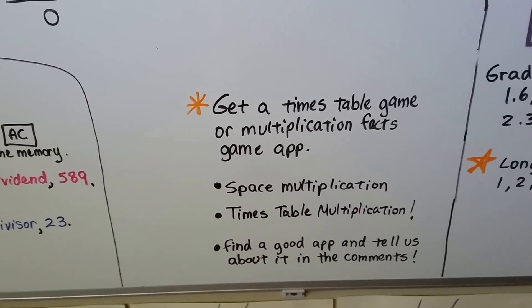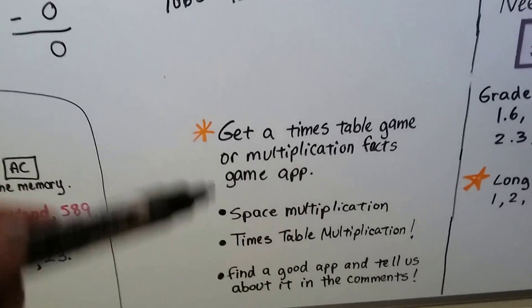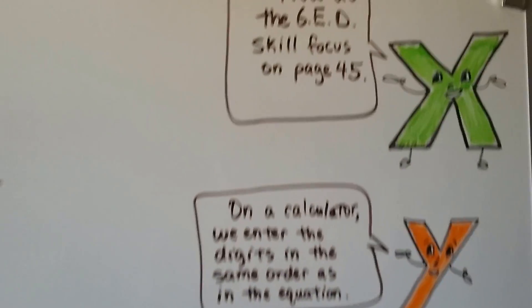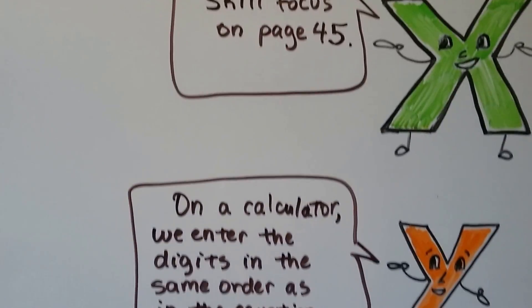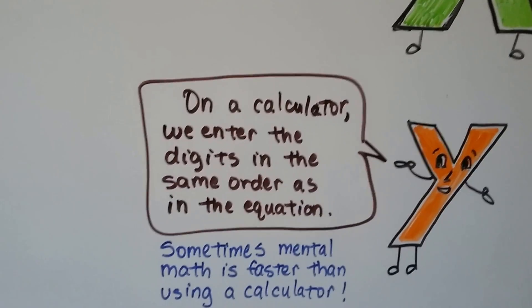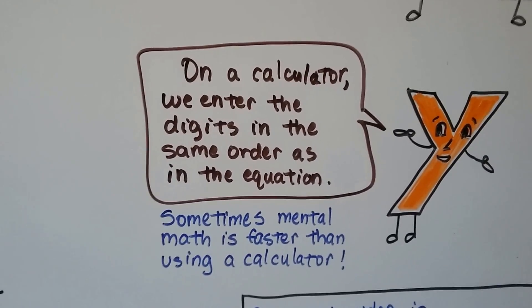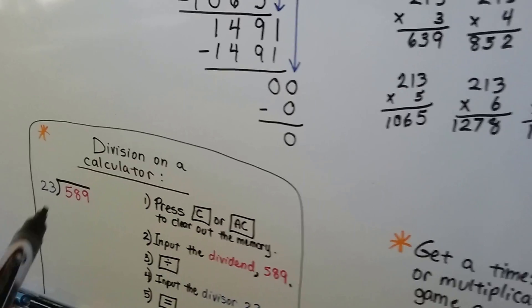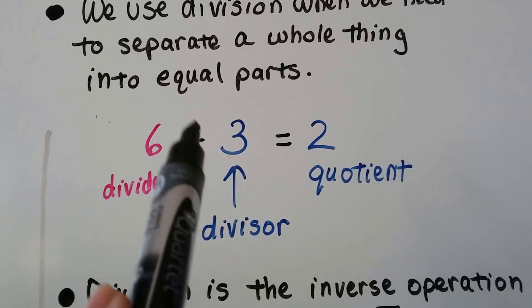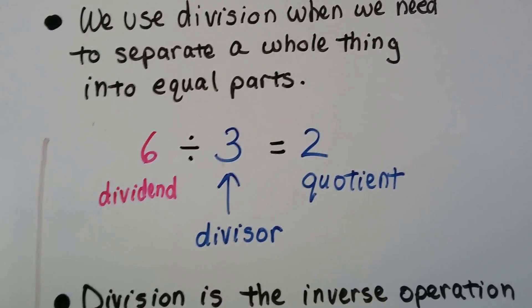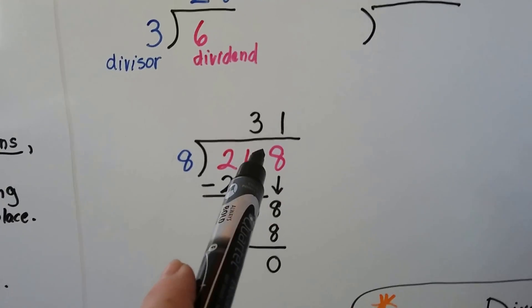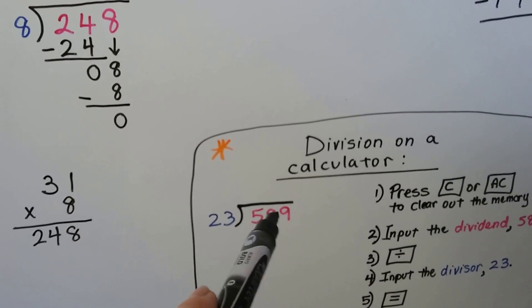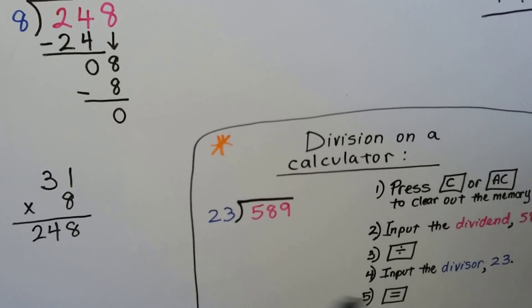Get an app and start practicing to save precious minutes. Now you should be ready to do the GED Skill Focus on page 45. Remember: on a calculator, enter digits in the same order as in the equation, and sometimes mental math is faster. For a division problem written as a fraction, enter the numerator first, then the division sign, then the denominator, then equals. For long division format, put the inside number — the dividend — in first, then the division button, then the divisor, then equal.